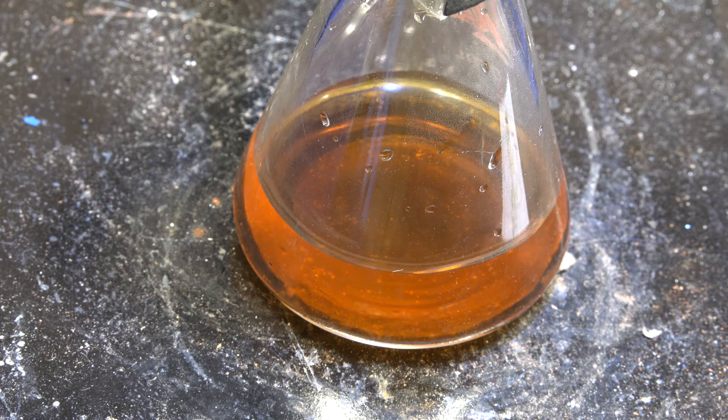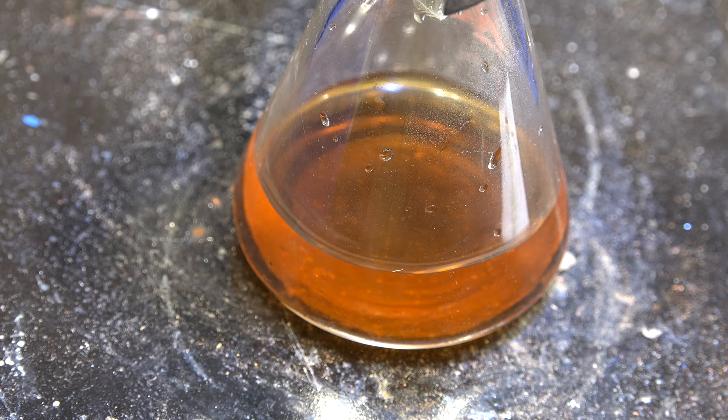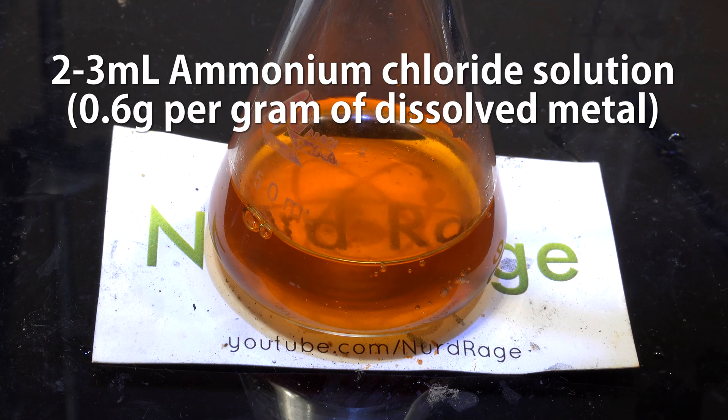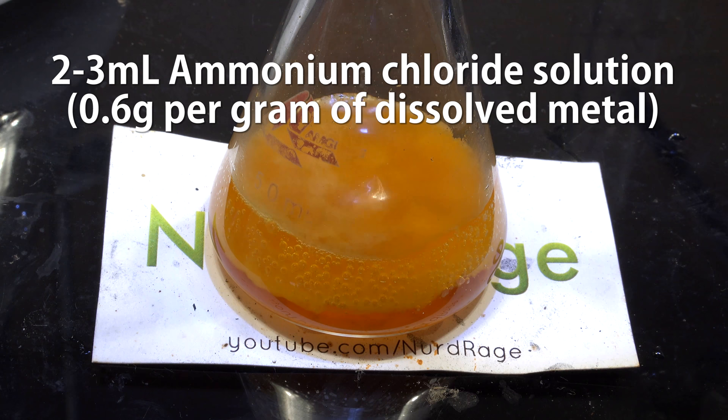Now if you're certain you don't have other noble metals like gold or palladium, then you can add a reducing agent right here, like hydrazine or sodium metabisulfite, to reduce the platinum to metal. I can't do that though, because I was told by the lab this platinum contains a few percent of palladium, so I have to separate that first. To separate out the platinum from the palladium, we add in a saturated solution of ammonium chloride, about 2 or 3 milliliters. Now if you have larger quantities and need more precision, you add 0.6g of ammonium chloride for every 1g of platinum you expect to recover.